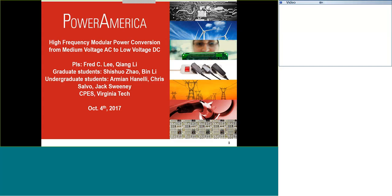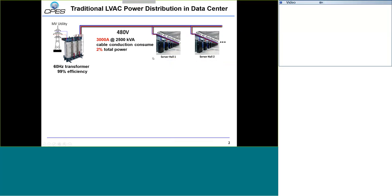This technology can be used for many different applications. Our main application is for the data center. This picture shows the conventional low-voltage AC power distribution in today's data center. Basically, medium voltage comes in, goes through a line-frequency transformer, then steps down to low-voltage AC — for example, 480 volt. People use this 480 volt to distribute inside the data center and then eventually go inside the server hall.